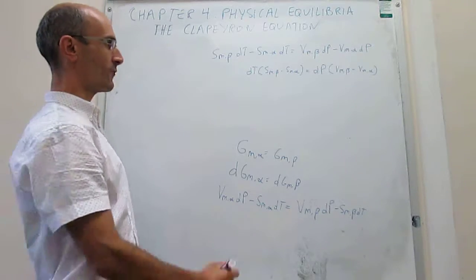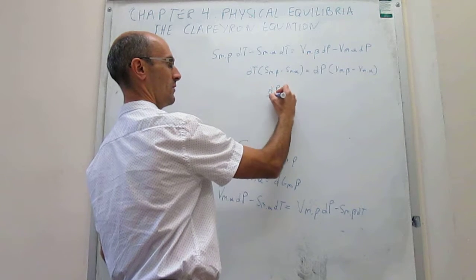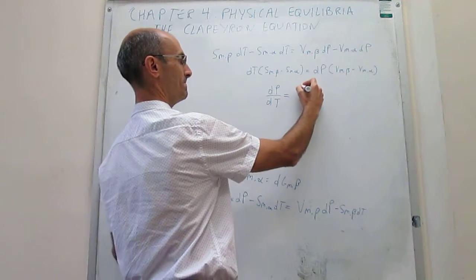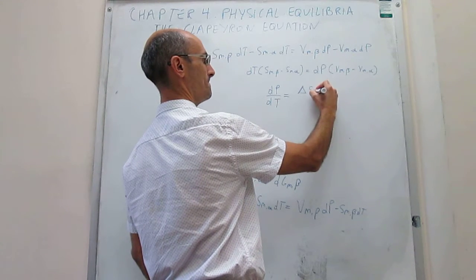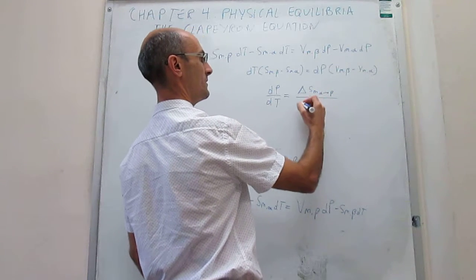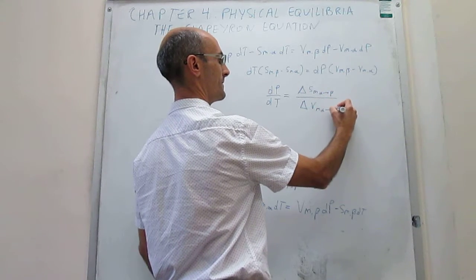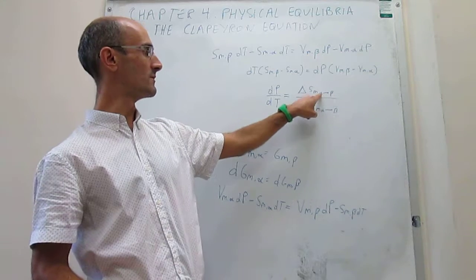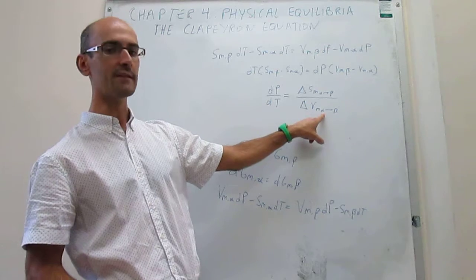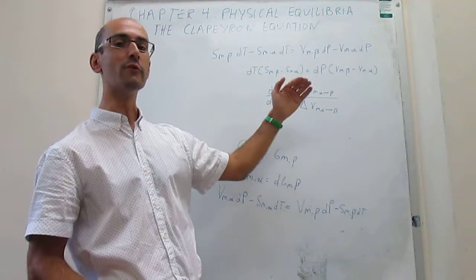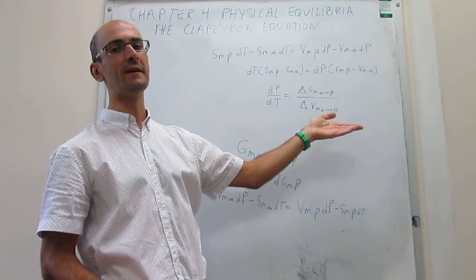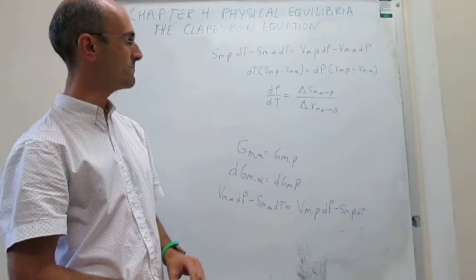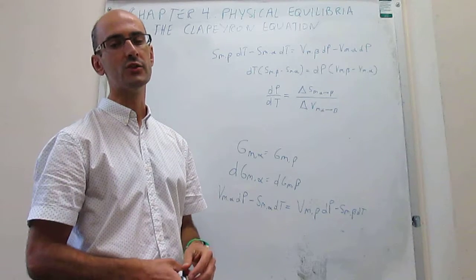Now we're ready to take that ratio of differentials. dP/dT is going to be equal to the change in molar entropy from alpha to beta over the change in molar volume from alpha to beta. Notice that this change in molar entropy when you go from alpha to beta will be the molar entropy of the final phase beta minus the molar entropy of the initial phase alpha — exactly what we have here. And the change in molar volume when you go from alpha to beta will be the molar volume of the final phase minus the molar volume of the initial phase. So this is just a change in entropy upon the phase transition, and that is the change in molar volume for the phase transition.